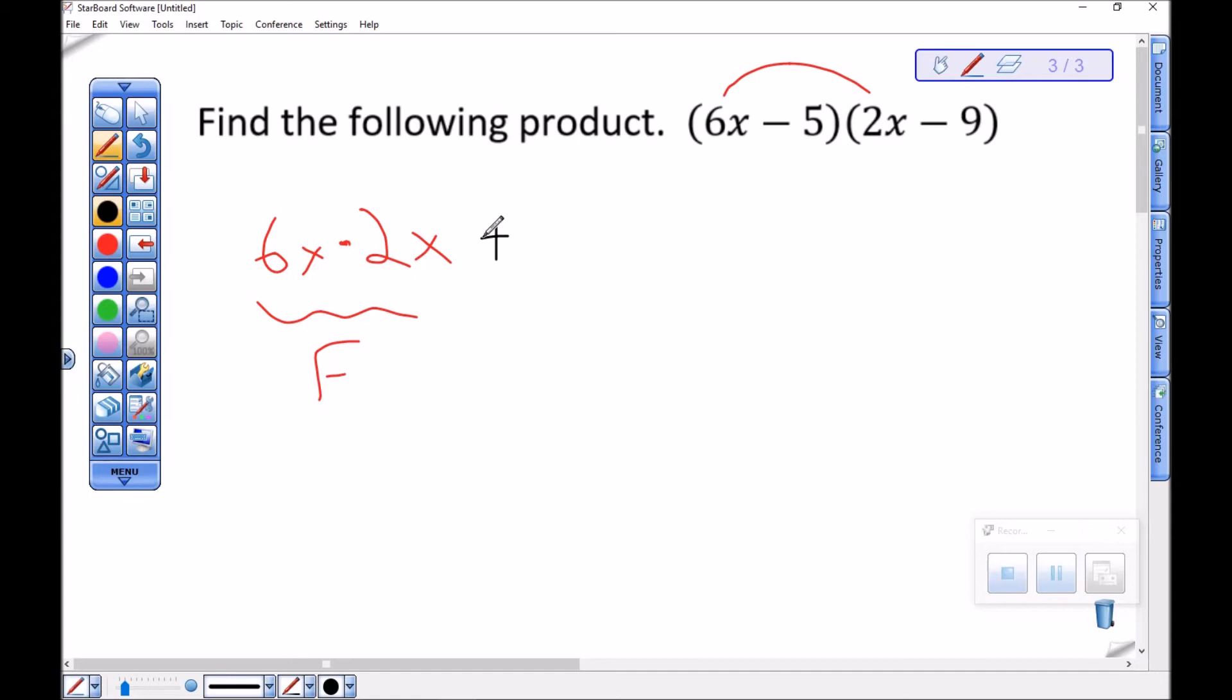You can go straight to 12x squared if you want. So then outside, my O, first times last. Notice this is 6x times negative 9, so 6x times negative 9 will be negative 54x.